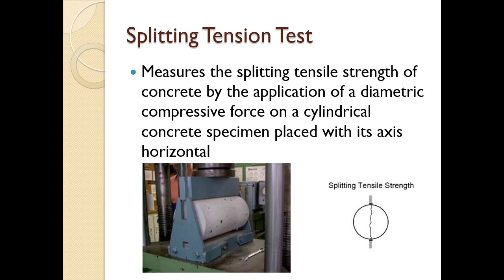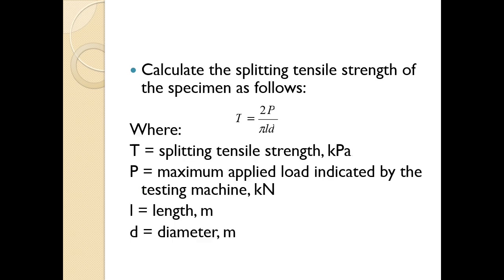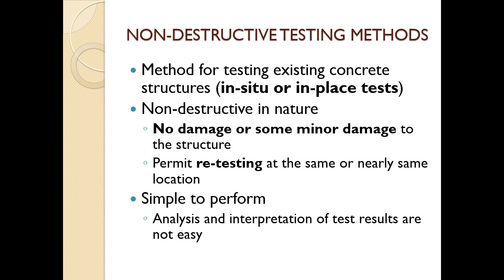The splitting tension test measures the split tensile strength of concrete by application of a diametrical compressive force on a cylindrical concrete specimen placed with its axis horizontal, as shown in the figure. From this test, we calculate the split tensile strength using the given formula. You have to study the formula and write the procedure for how to conduct the split tensile strength test.